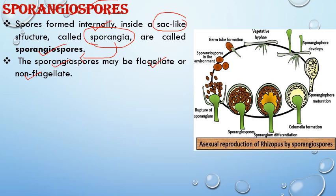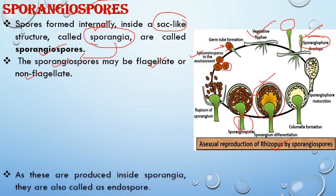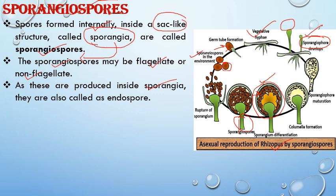The sporangia is the special sac-like structure inside which spores are produced, and the stalk-like structure is known as sporangiophore. These sporangiospores may be motile or non-flagellated and germinate to give rise to new vegetative hyphae. As these are produced inside sporangia, they are also known as endospores. This is found in the case of Rhizopus.